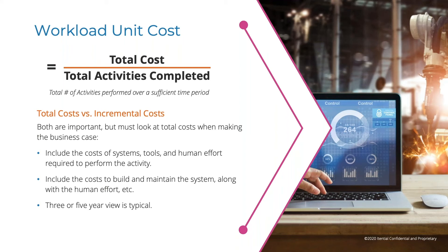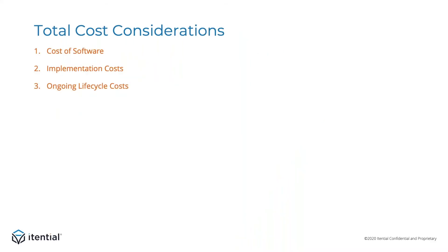One question that comes up when calculating workload unit cost is how best to capture and represent the costs. We recommend looking at the total costs associated with the automation system over a sufficient period of time — usually three to five years. You can then prorate those costs to do calculations for shorter time periods such as a month, quarter, or year. When I talk about costs, I mean all of the costs: the cost of the software, the implementation costs, the ongoing lifecycle costs, as well as costs that are frequently underestimated.